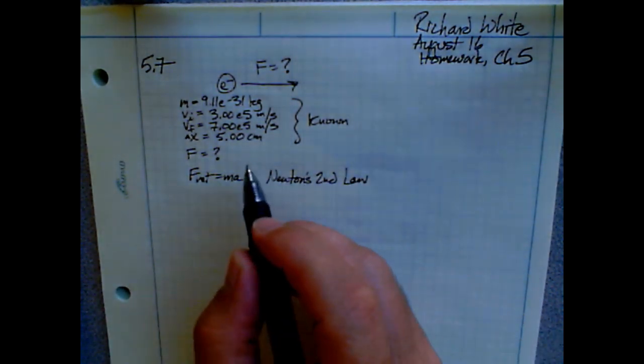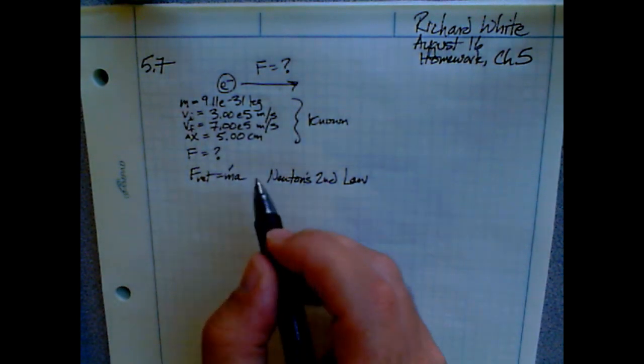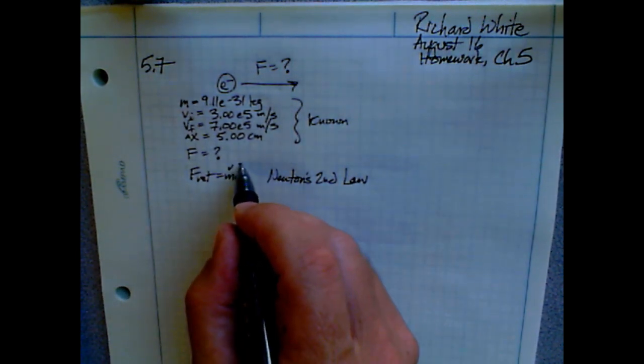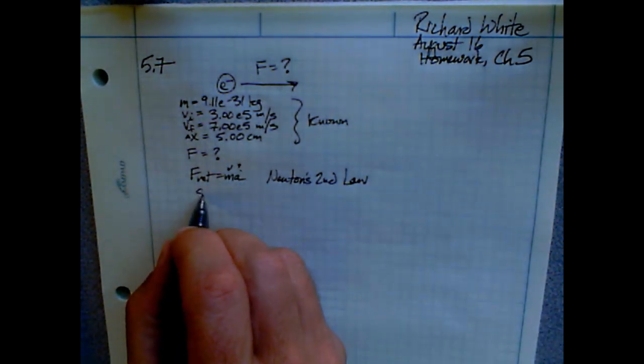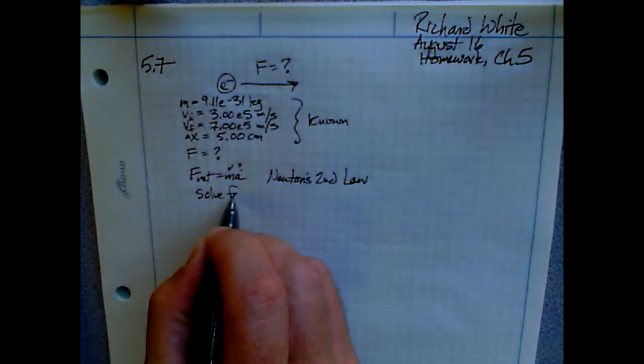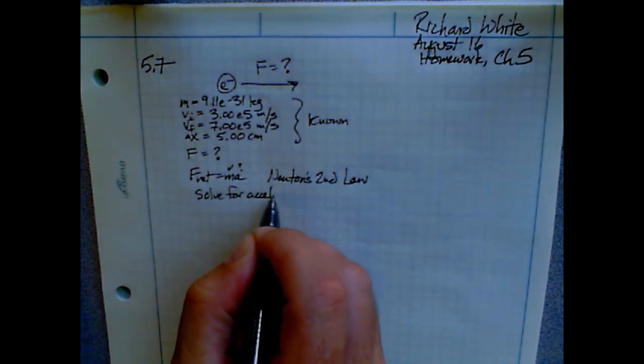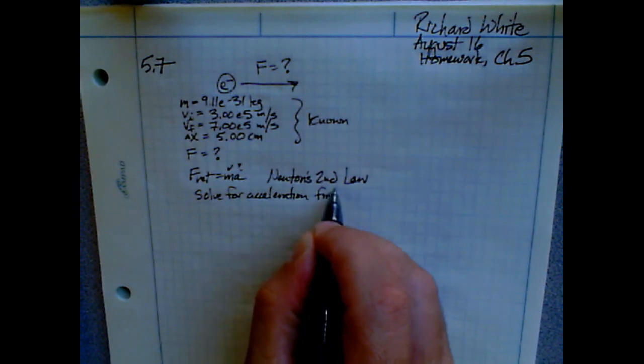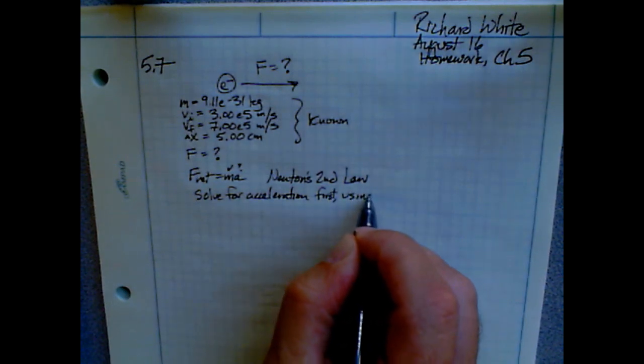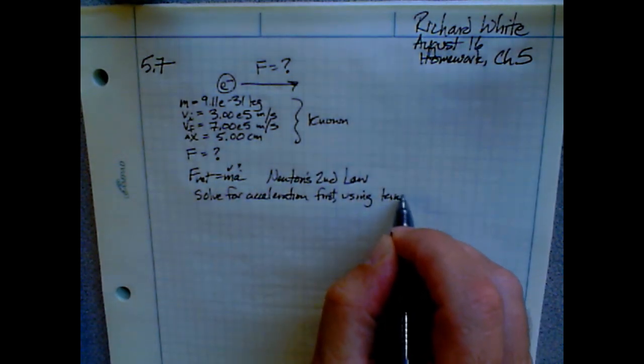Write the formula down in variable form. Rearrange the formula as necessary to solve for the unknown variable. You could plug numbers in directly and then rearrange later, but most teachers prefer that you rearrange the formula first. Notice that I'm working vertically here, usually writing one formula per line. Notice also that I'm notating my work, which will help other people figure out what I've done.